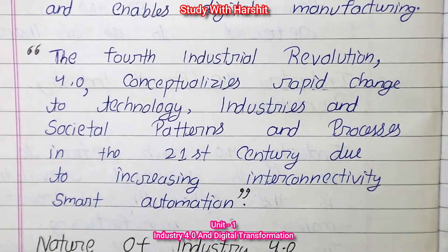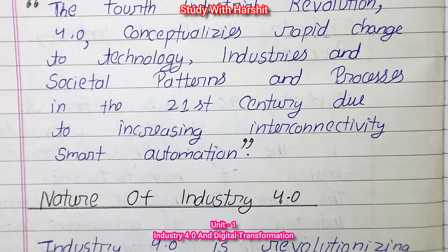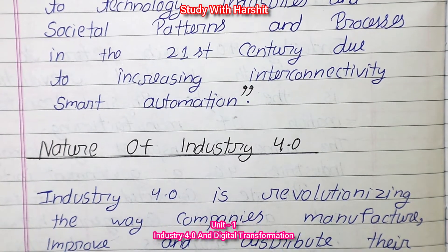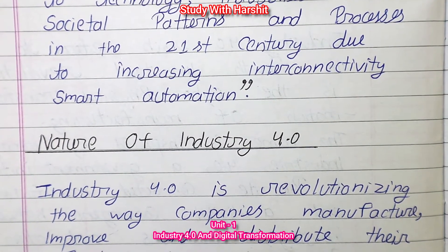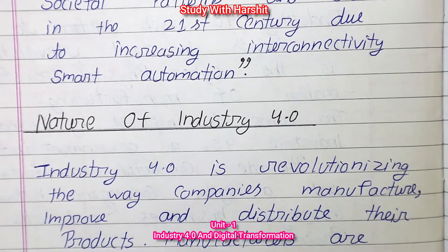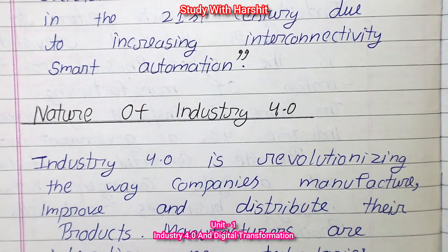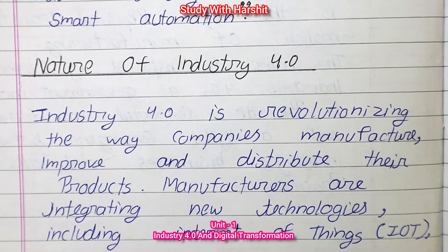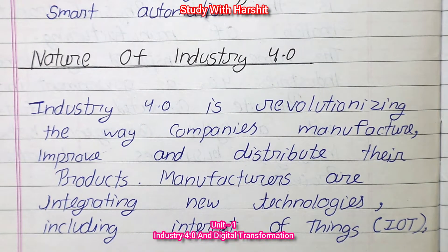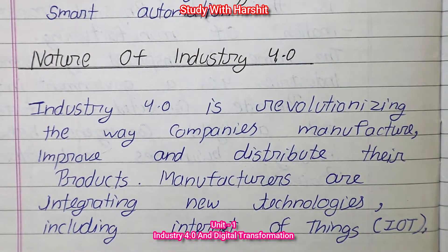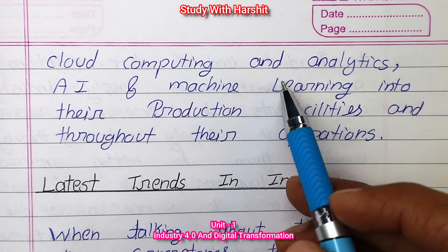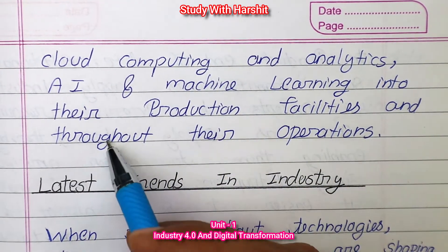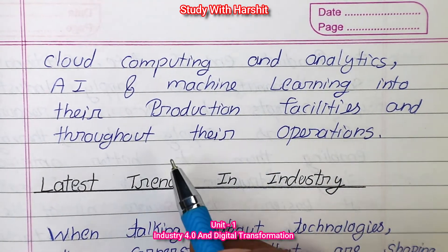Nature of Industry 4.0: Industry 4.0 is revolutionizing the way companies' manufacturing processes improve and distribute their products. Manufacturers are integrating new technologies, including Internet of Things, Cloud Computing, Analytics, AI and Machine Learning into their production facilities and throughout their operations.